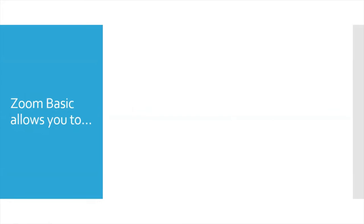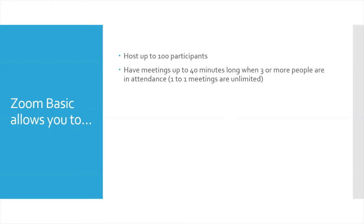The Zoom Basic free membership allows you to do a lot of things. You can host up to 100 participants — and by participants, I'm referring to anybody else but you. You can have meetings up to 40 minutes long when three or more people, including yourself, are in attendance. After that 40 minutes, Zoom will just time out, but you can basically just start a new meeting if you want to continue on. Now one-to-one meetings — if it's just you and somebody else — those are basically unlimited.